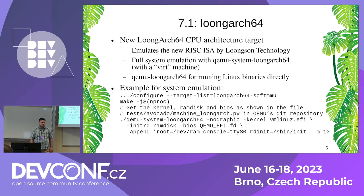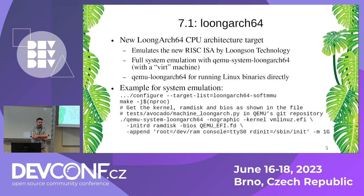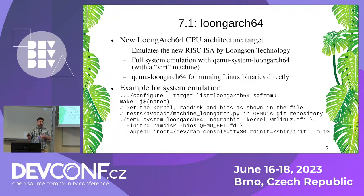One of the big things added in QEMU 7.1 is LoongArch64 support. LoongArch64 is a new RISC CPU by the Loongson technology company — a Chinese company — and it's said to be a mixture of RISC-V and MIPS. QEMU now supports both full system emulation with the qemu-system-loongarch64 command, and you can also run Linux binaries for this architecture directly on a Linux host, for example on your x86 Linux host, with the user-mode binary emulator qemu-loongarch64.